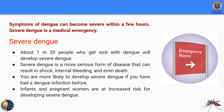Four key points about severe dengue: it only appears in about one in 20 people who get dengue; it is very serious and can result in shock, internal bleeding, and even death; you are more likely to develop severe dengue if you have had a dengue infection before; and the most at-risk population are infants and pregnant women.